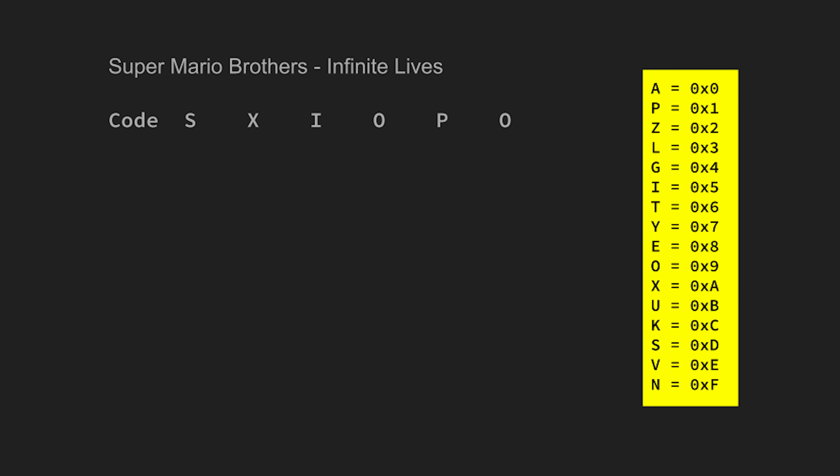Game Genie codes are either 6 or 8 characters long, but for this example we'll focus on the 6-character codes. Each letter in a Game Genie code corresponds to a certain hex value as shown in the list. So if we take our example SXIOPO, we get the following hex values: hexadecimal D, A, 5, 9, 1, and 9.